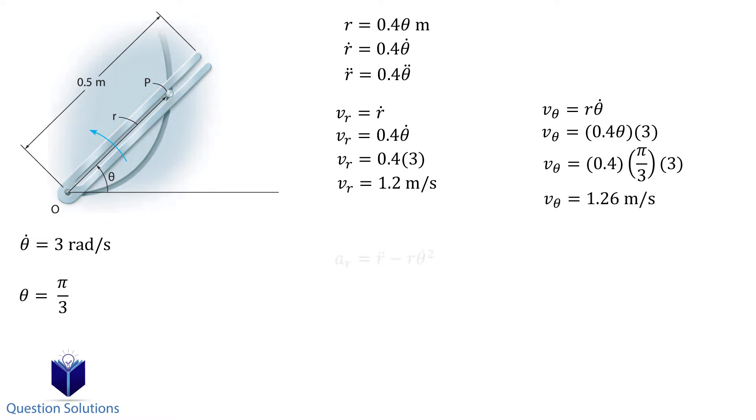We can now move on to acceleration. The second derivative of the angular velocity is zero, since it's a constant.